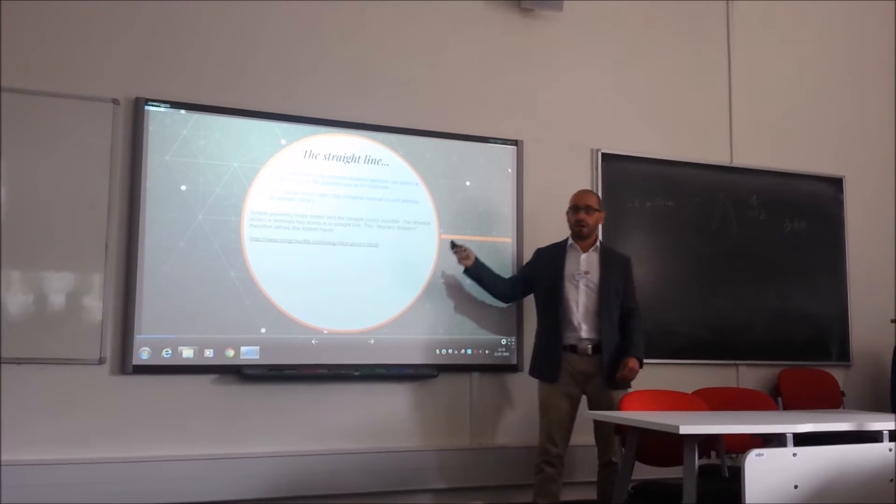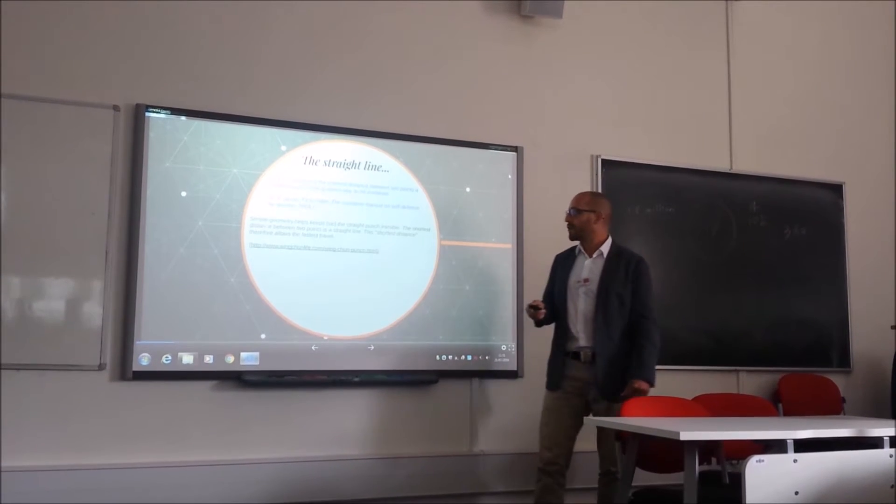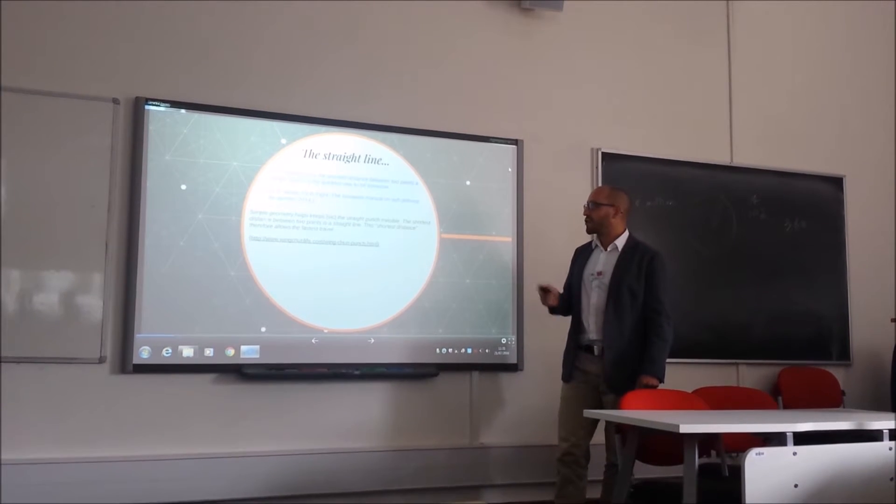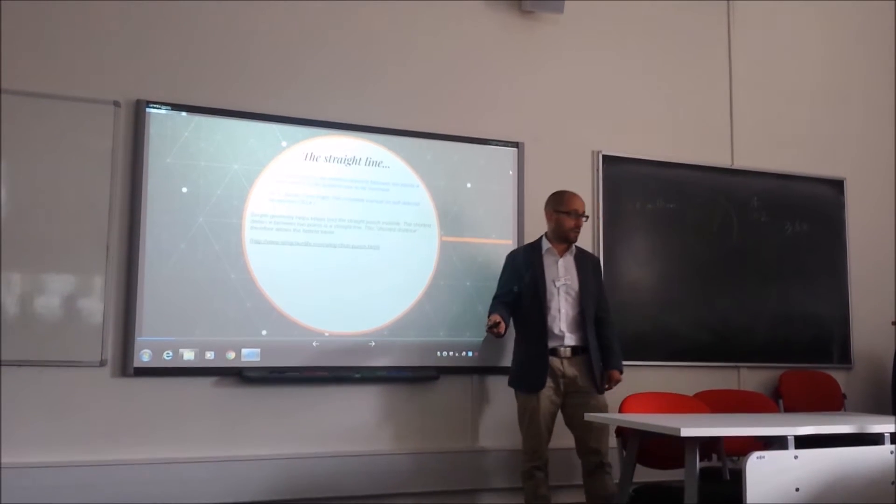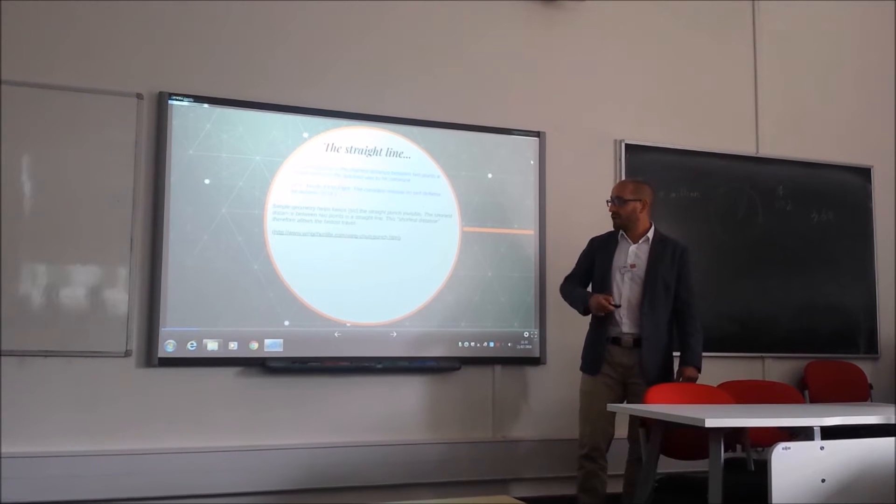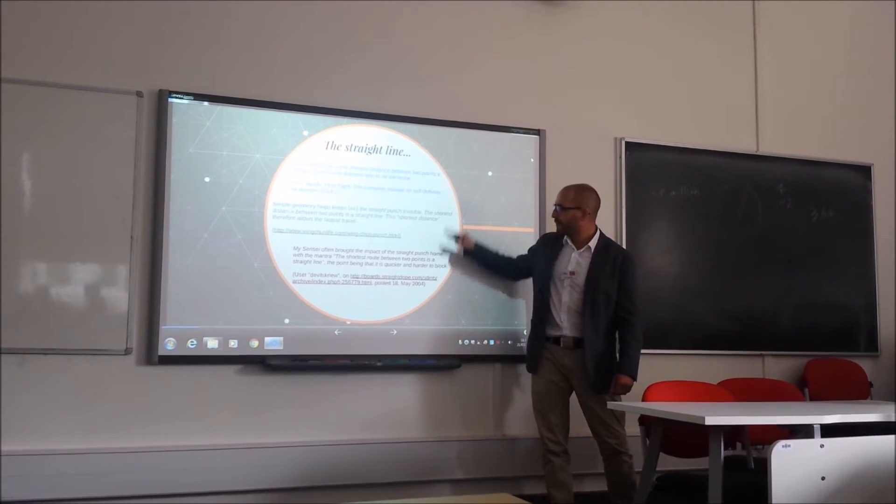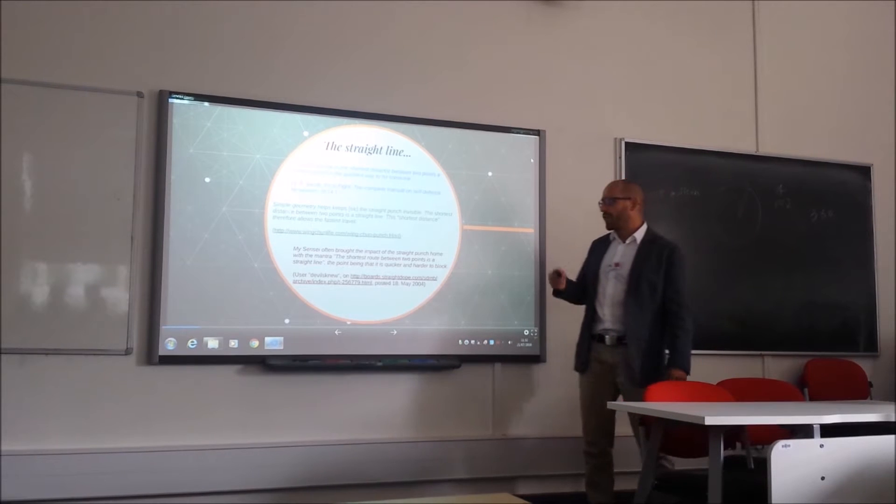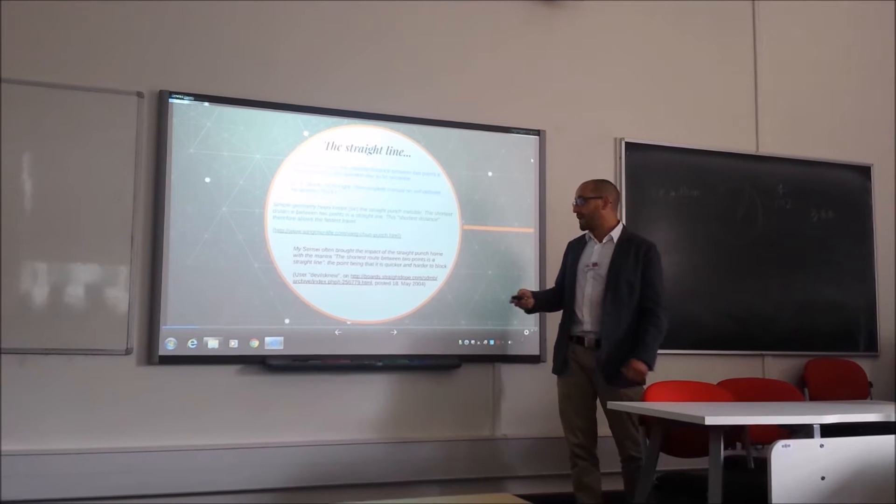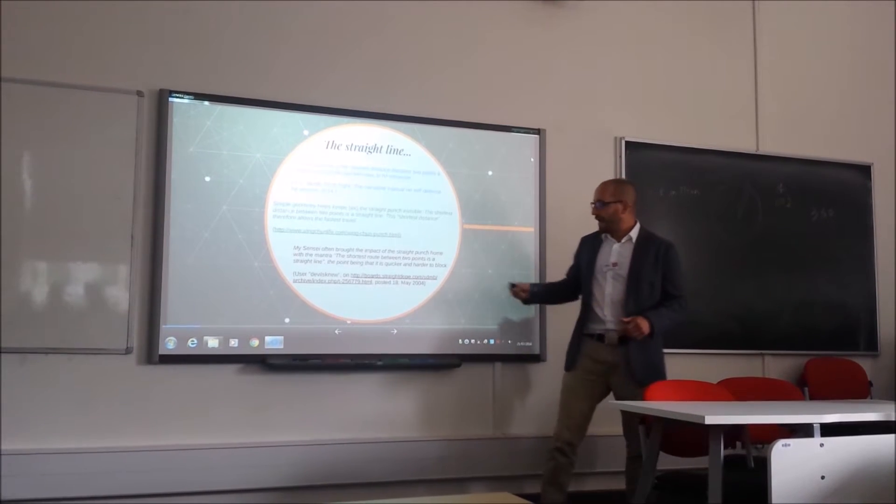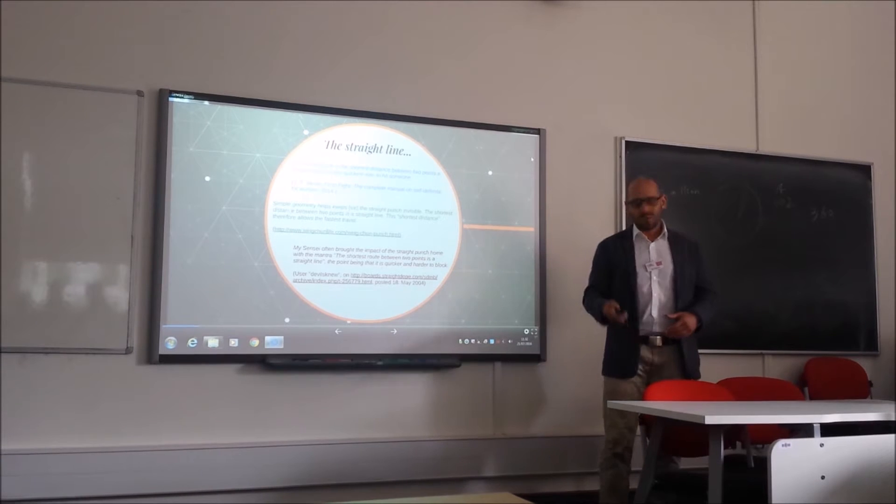This is from a webpage from a Wing Chun teacher: Simple geometry keeps the straight punch invisible. The shortest distance between two points is a straight line. This shortest distance therefore allows the fastest travel, meaning the straight punch is the quickest. And you also find it in internet discussions from 2004. My sensei often brought the impact of the straight punch home with the mantra, the shortest route between two points is a straight line. The point being that it is quicker and harder to block. And he is referring to his sensei, so the notion had been transferred for a while before that.